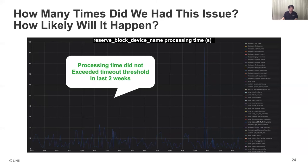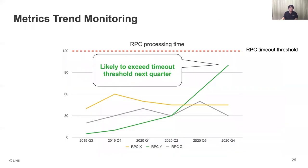The last major usage is metrics trend monitoring, with the purpose of preventing issues in advance. RPC processing time is a good example for trend monitoring — if we see the time series change, we can easily predict when RPC processing time might exceed the timeout threshold next quarter. We have deployed Oslo Metrics since the start of last quarter, so we don't have enough time series data yet, but we will keep tracking metrics trends and hope to share interesting results in the future.